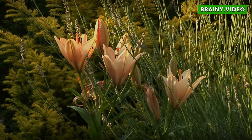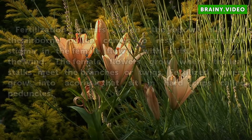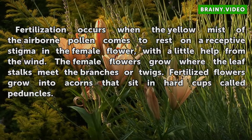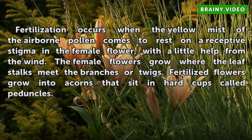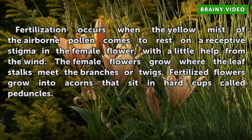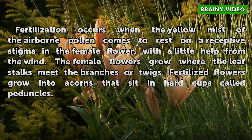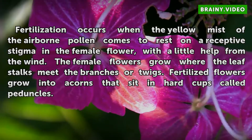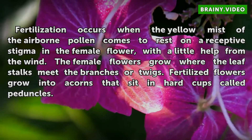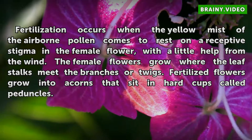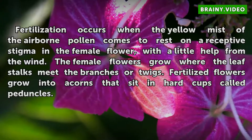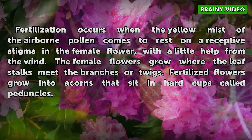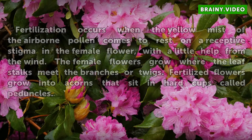Fertilization occurs when the yellow mist of the airborne pollen comes to rest on a receptive stigma in the female flower, with a little help from the wind. The female flowers grow where the leaf stalks meet the branches or twigs. Fertilized flowers grow into acorns that sit in hard cups called peduncles.